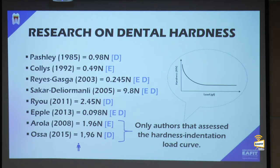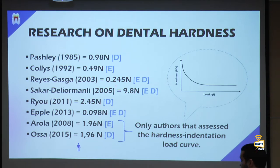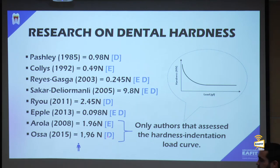Looking at the literature on dental hardness, authors working on dentine (D) and enamel (E) since 1995 used widely varying loads — 0.98 N, 9.8 N, 0.24 to 2.45 N — making results incomparable. Some authors even used the same load values but for different tissues. Crucially, none of these studies evaluated the full load curve; they did not assess the material's complete hardness behavior.